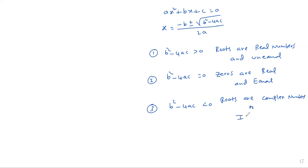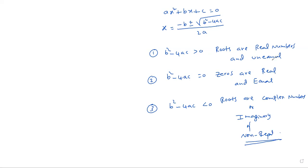Or you can say the roots are imaginary, or non-real. To summarize: if B² − 4ac > 0, roots are real and unequal; if B² − 4ac = 0, roots are real and equal; if B² − 4ac < 0, roots are complex, imaginary, or non-real.